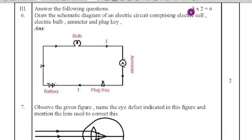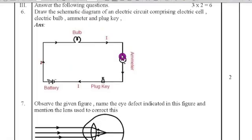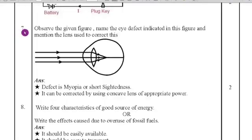Third main: answer the following questions — three questions, each carrying two marks. Sixth question: draw the schematic diagram of an electric circuit comprising an electric cell, electric bulb, ammeter, and plug key. The diagram is provided here. If you draw this correctly you will get two marks. Seventh question: observe the given figure, name the eye defect indicated and mention the lens used to correct it.